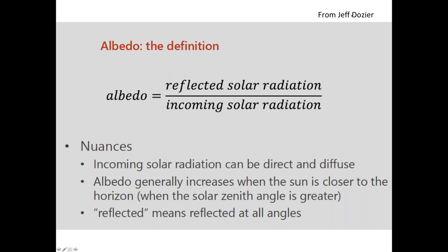Moving on to albedo — slides borrowed from Jeff Dozier who has spent his life studying this. Albedo is reflected solar radiation divided by incoming solar radiation. Nuances for modeling: incoming solar can be direct and diffuse, and some models parameterize albedo separately for direct versus diffuse. SUMMA lumps them together, but in complex terrain with shading, the difference may become important.